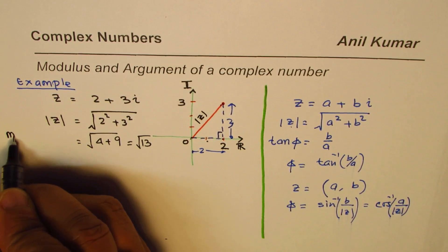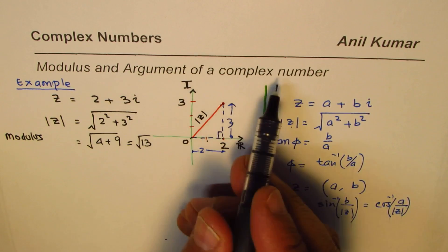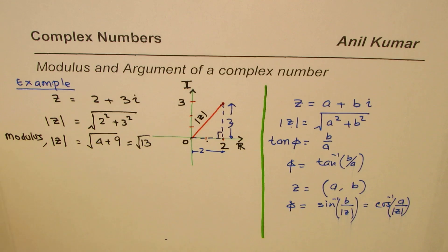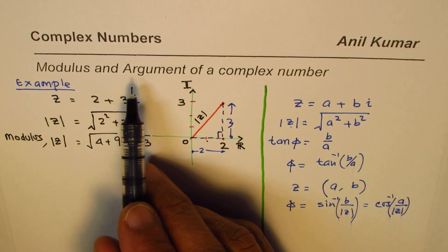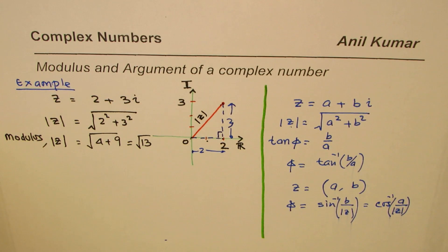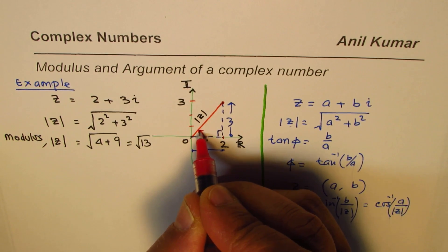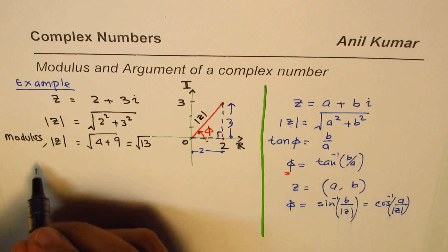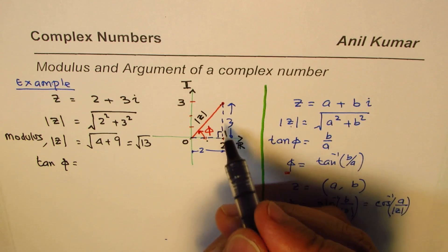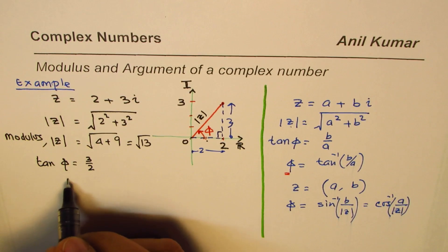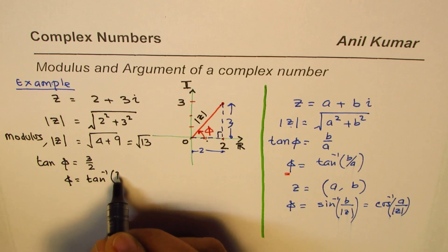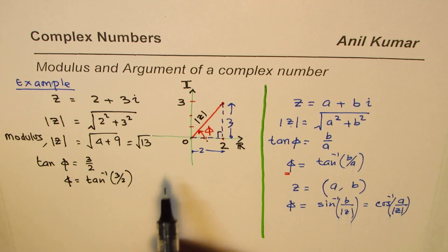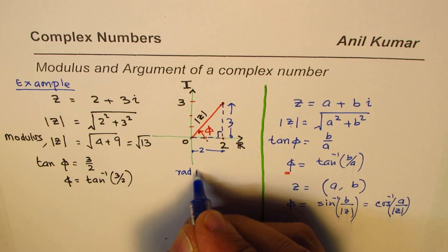This is called the modulus, represented by the vertical bars around the variable for the complex number. Now for the argument: we want to know what angle it makes with the real axis, written as phi. From the right triangle, tan(phi) equals opposite over adjacent, which is 3 over 2. So phi equals tan⁻¹(3/2). You can use a calculator to find answers in radians or degrees.